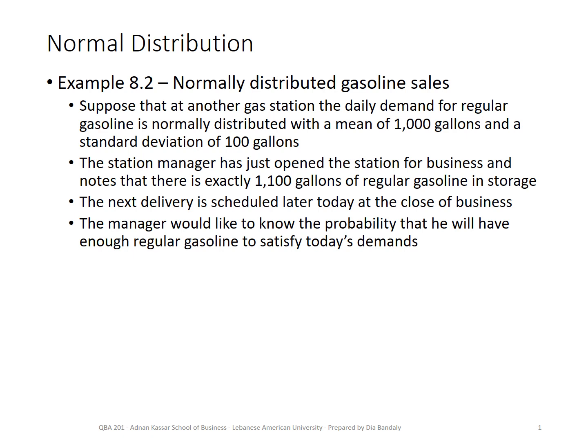This is a good example about a variable that has normal distribution. The variable under subject is the amount of gas sold daily by a gas station. From historical data we can tell the distribution of this variable — we're given that it has a normal distribution. This has to be given to you; you cannot get it on your own, at least in this course. The two parameters of a normal distribution are the mean and standard deviation, and they have to be given to you.